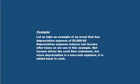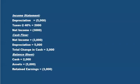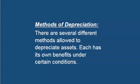As we see in this example, net income drives the cash flow statement. But since depreciation is a non-cash expense, it is added back to cash. On the income statement: depreciation is negative $5,000, taxes at 40% is $2,000, and net income is negative $3,000. On the cash flow statement: net income is negative $3,000, plus depreciation of $5,000 gives a total change in cash of $2,000. On the balance sheet: cash equals $2,000, the asset is reduced by $5,000, and retained earnings is decreased by $3,000.